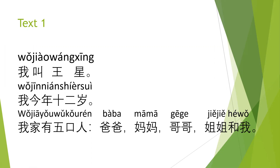Read them together again. 我叫王兴。我今年十二岁。我家有五口人。爸爸，妈妈，哥哥，姐姐和我。